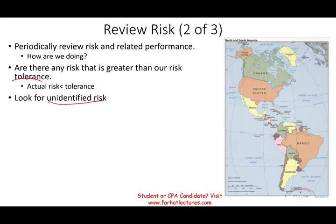This is an important concept — once Bill Gates was asked what keeps him awake at night when Microsoft was at its peak. He said: some new person coming up with a new product that I'm not aware of — which is unidentified risk. That's the worst type of risk because you're not aware of it. It comes at you from the side. So how can you find any unidentified risk? Use data, artificial intelligence, always look at new research — what's going on in the industry.